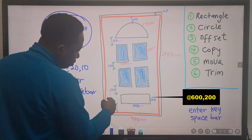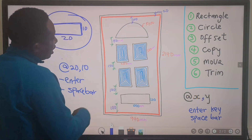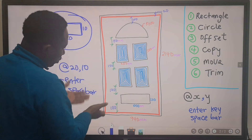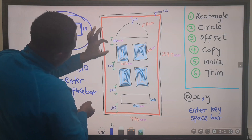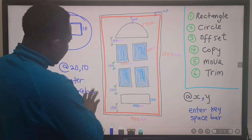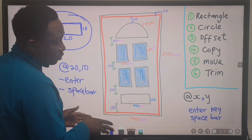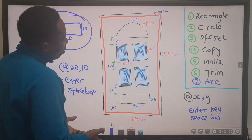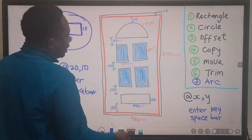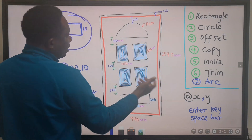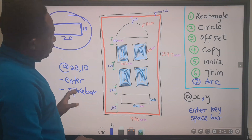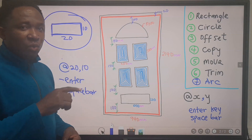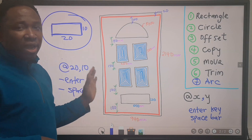We are going to copy this into 4 positions, and we are going to move the 600 by 200 rectangle to its position. There is a circle of radius 300, and this distance is 100. The space between elements here is 150 and the space between these is 100. With these dimensions, we are going to draw this accurately in AutoCAD. It is important to make a sketch on paper with dimensions — it's going to make your work a lot easier.